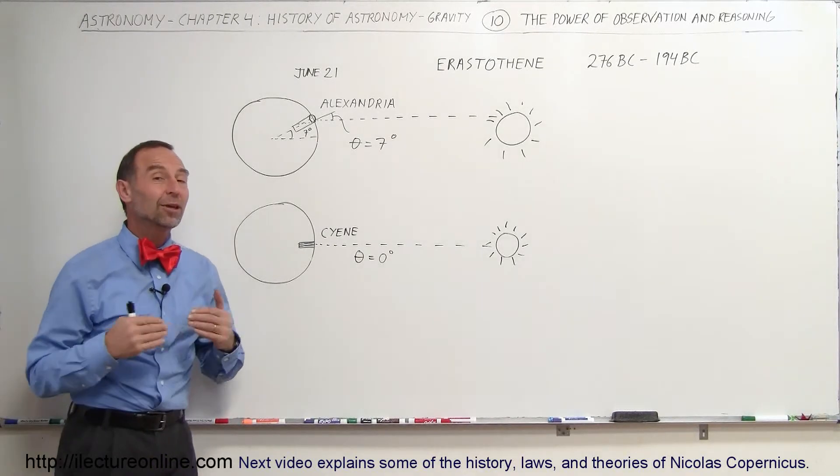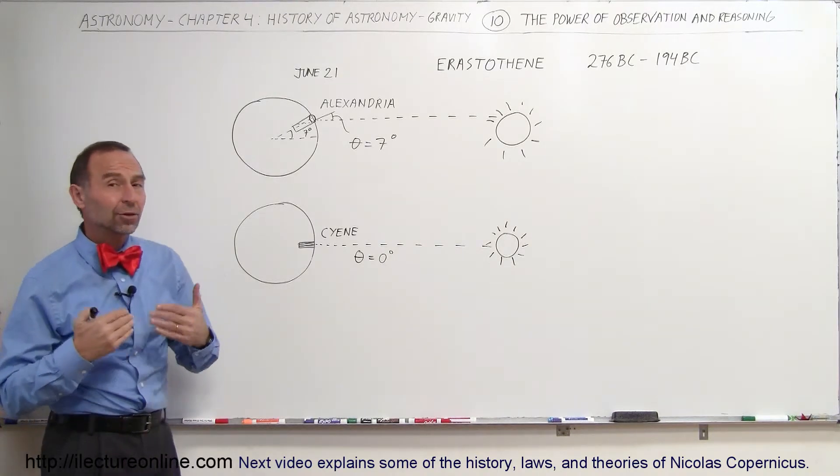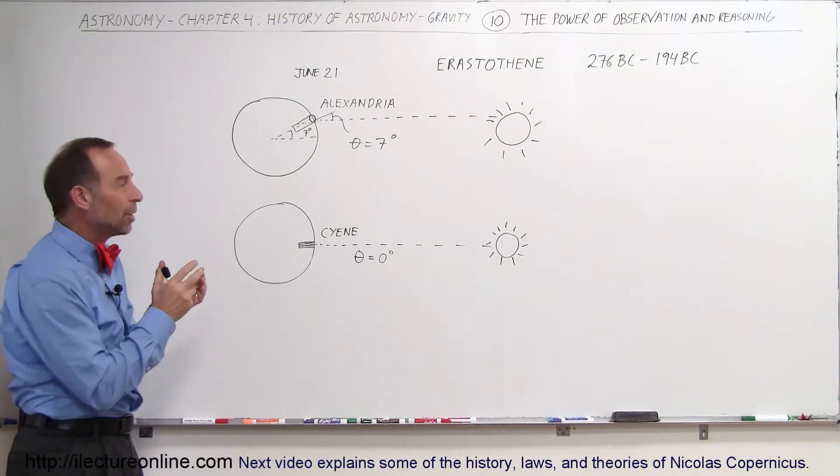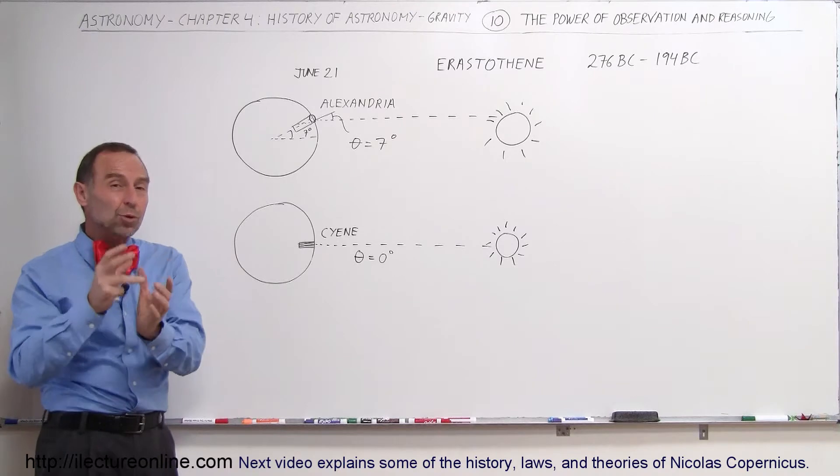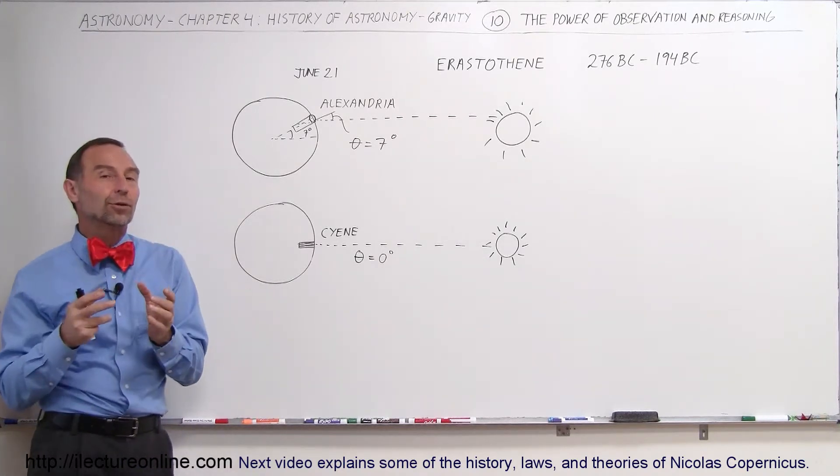Welcome to our lecture online, and now let's see what Eratosthenes brought to the table. It turns out that Aristarchus had already done a tremendous job figuring out the size of the Moon relative to the size of the Earth and the size of the Sun relative to the size of the Earth.